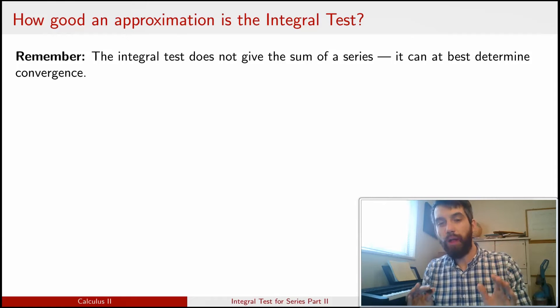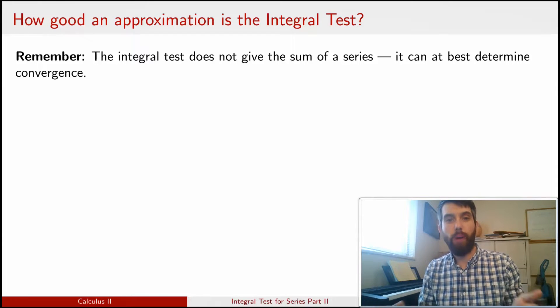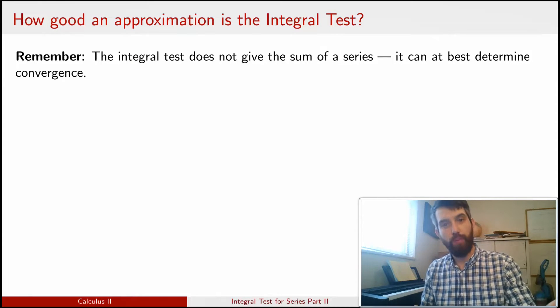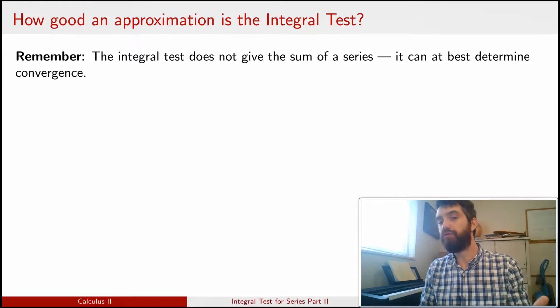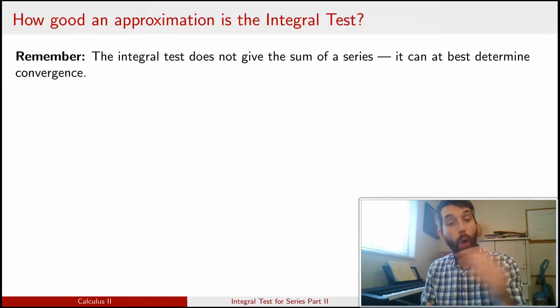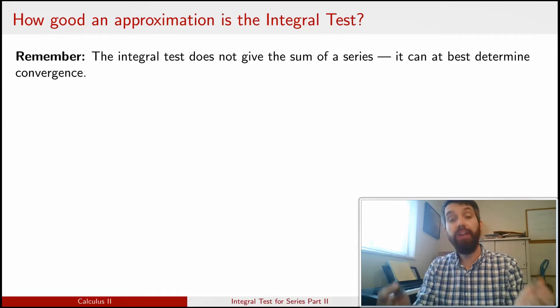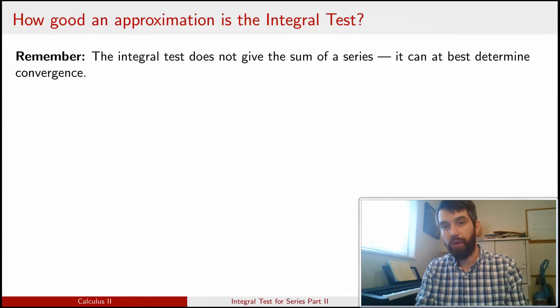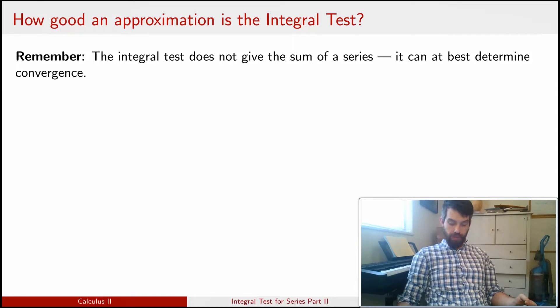Indeed, it was worthwhile noting that while we could get an improper integral and we could figure out the value of that improper integral, the value of the improper integral was not the same thing as the sum of the series. The one converged if the other converged, but they didn't necessarily converge to the same value. So, let's introduce some notation.